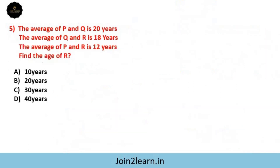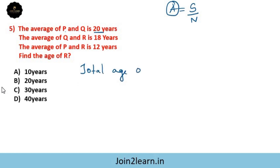Last problem: the average age of P and Q is 20 years, the average age of Q and R is 18 years, the average age of P and R is 12 years. Average equals sum of all observations divided by number of observations.